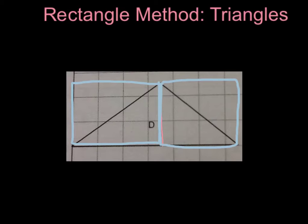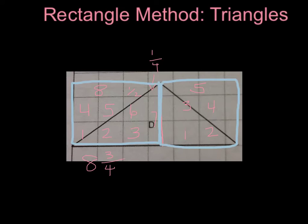The area of the first rectangle is 8, with one half and one fourth — so altogether I have eight and three-fourths squares. The area of the rectangle on the right: counting the full squares and the half pieces together gives seven and a half squares.